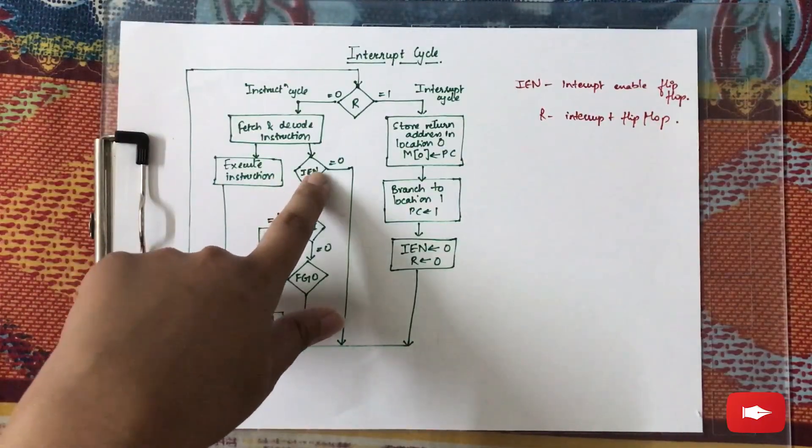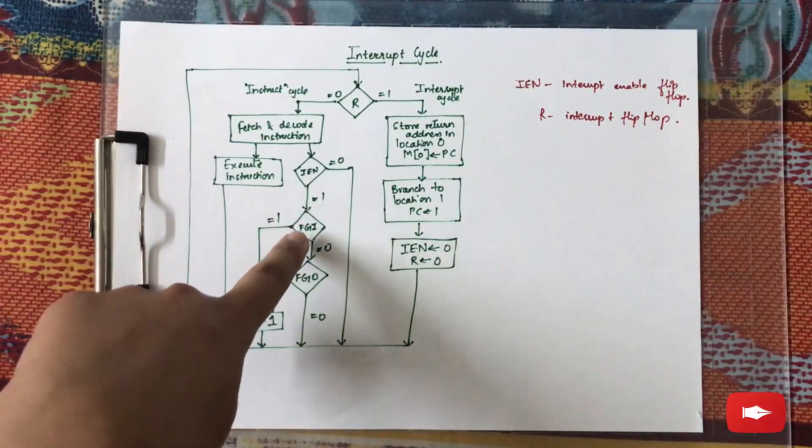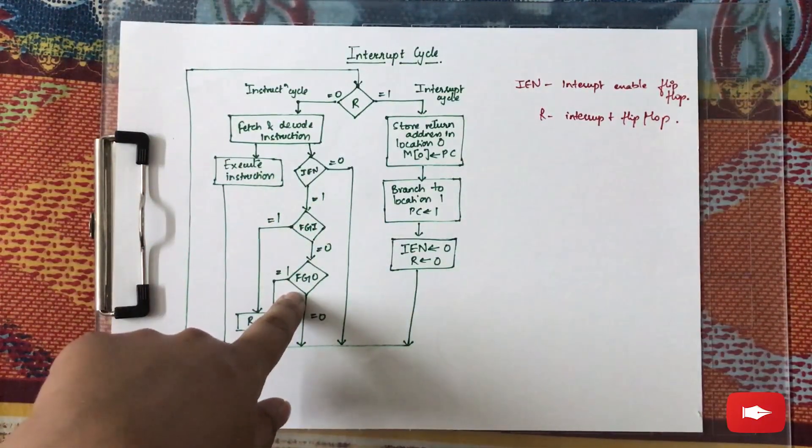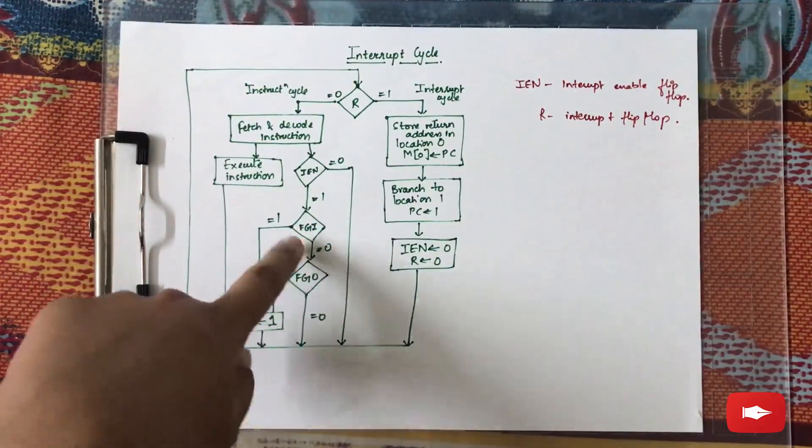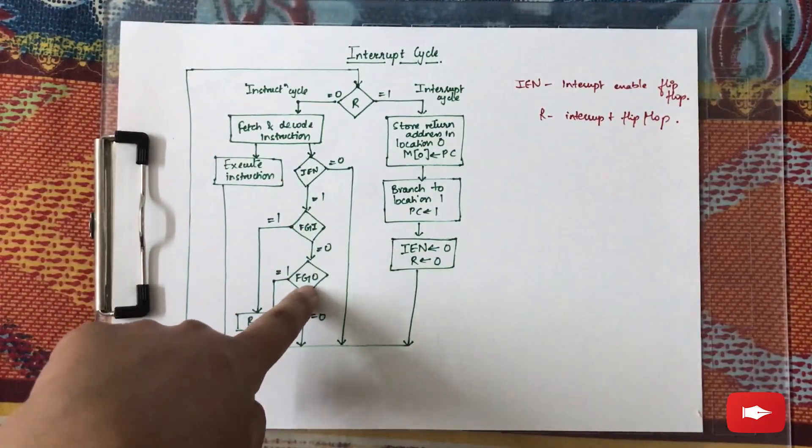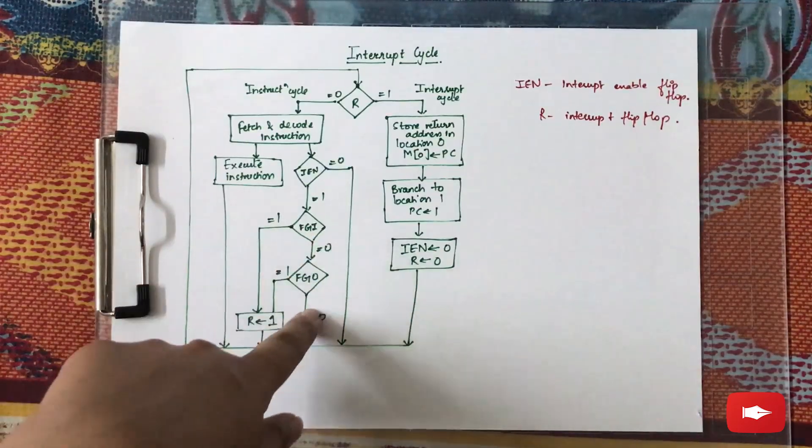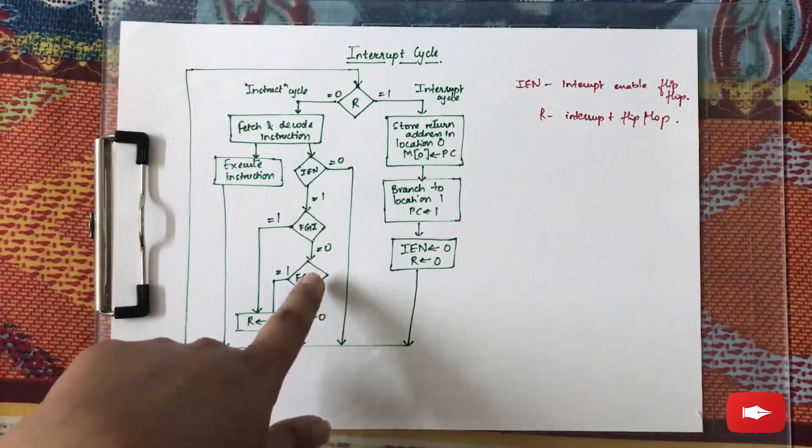But if the value of IEN is one, it is checked for the input or output interrupt. If the value of FGI and FJO - that is, the input flip-flop and output flip-flop - both are zero, that means no such interrupt needs to be handled and the next instruction is executed.